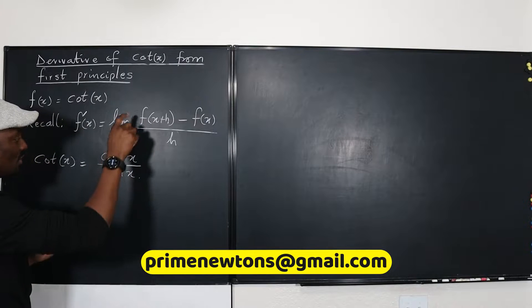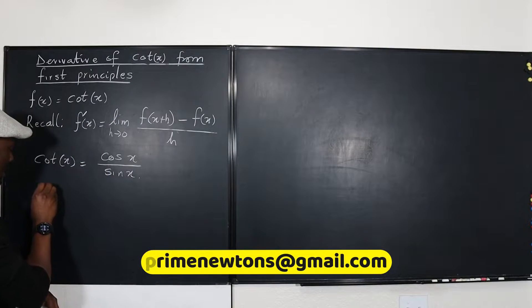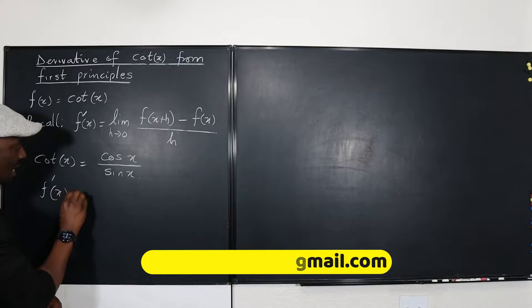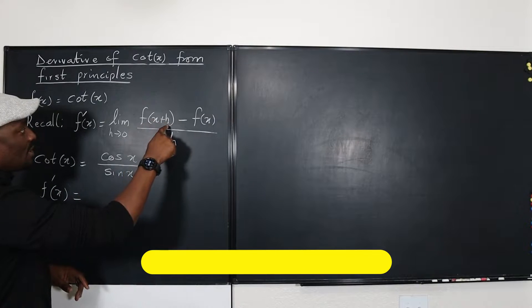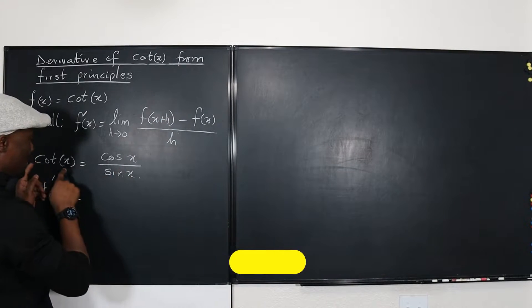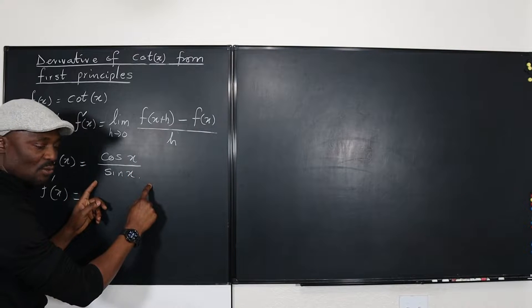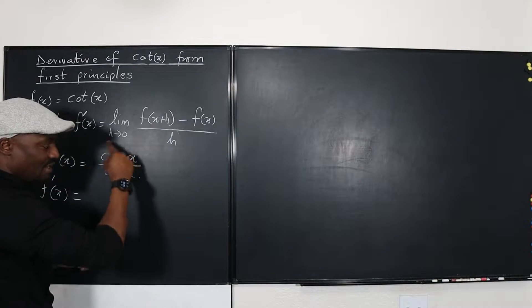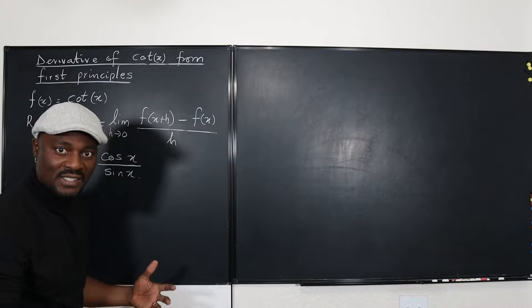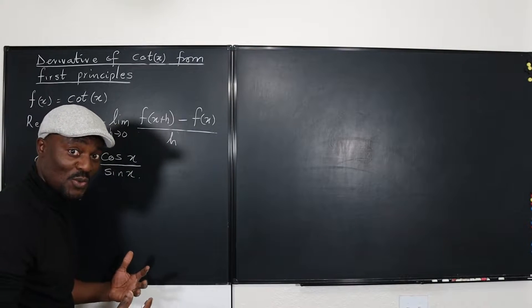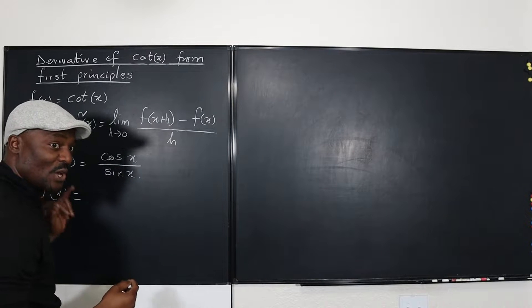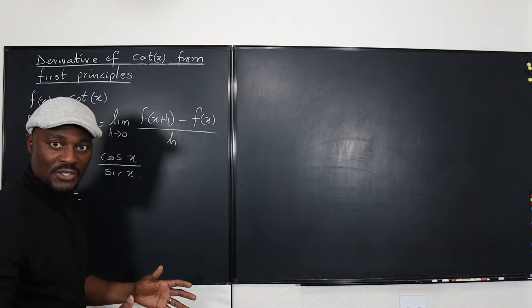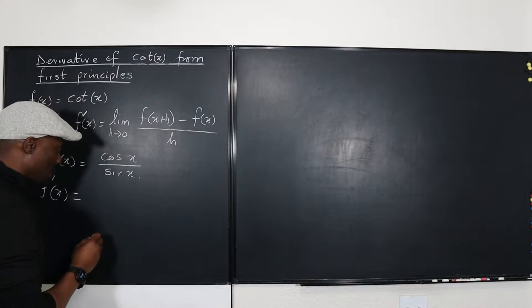So the definition, using it, we're going to say that f prime of x has to be equal to the function of x plus h. Well, this function will now write this way. We can't use this because we don't know so much about cotangent, but we can relate with cosine and sine. So remember, that's a trick you want to always employ. If you don't know what to do with cotangent, convert it to something in terms of sine and cosine.